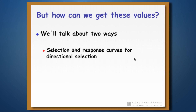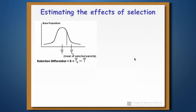So how can we actually get these values? There are two different ways. One is by using selection and response curves for directional selection — this only works for directional selection. Or we can use parent-offspring regression, which will work for any kind of selection. Let's look at the directional selection approach. We have an initial population with a mean trait value T-bar.